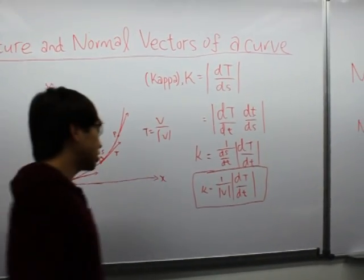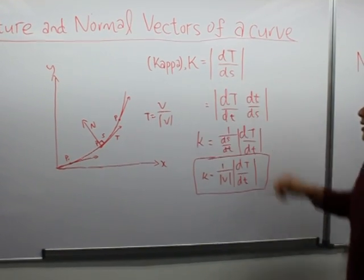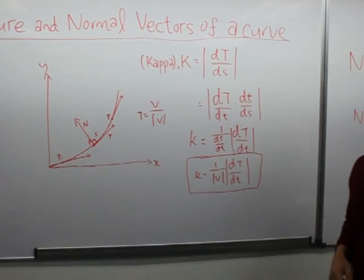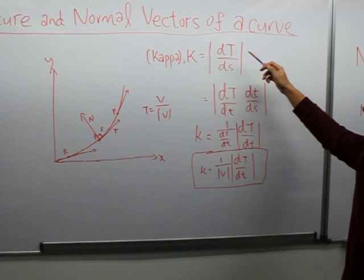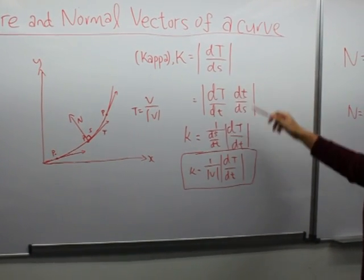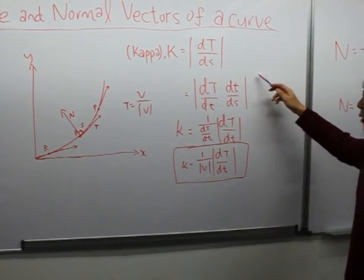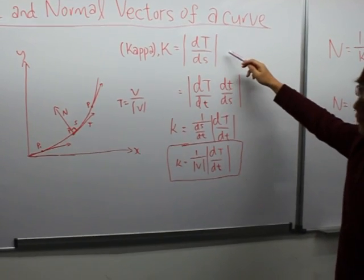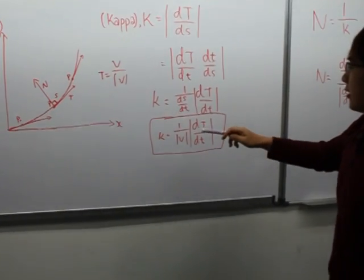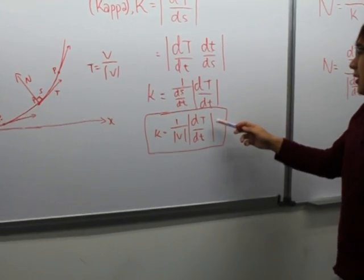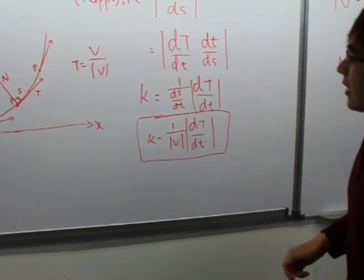The measurement of curvature is in terms of kappa, which is k. The differentiation is actually equal to the differentiation of the unit tangent vector in terms of s, the arc length. So by using the chain rule method, we can simplify this formula into 1 over the magnitude of V times the differentiation of the tangent with respect to time.